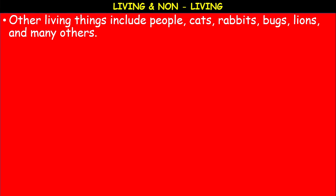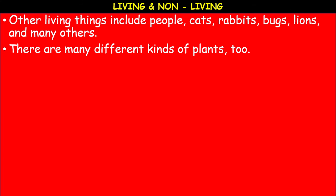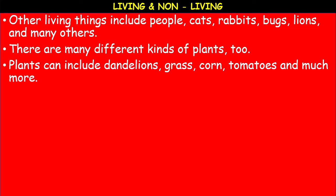Other living things include people, cats, rats, rabbits, bugs, lions, and many more. There are many millions of living organisms and many different kinds of animals and plants. Examples of plants include dandelions, grass, corn, tomatoes, and much more.